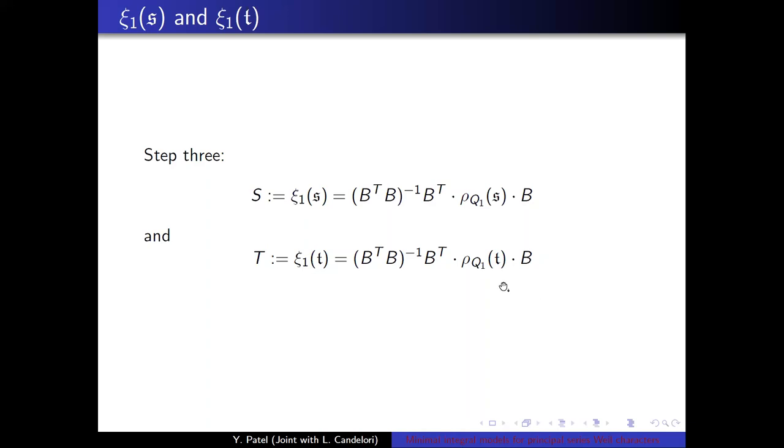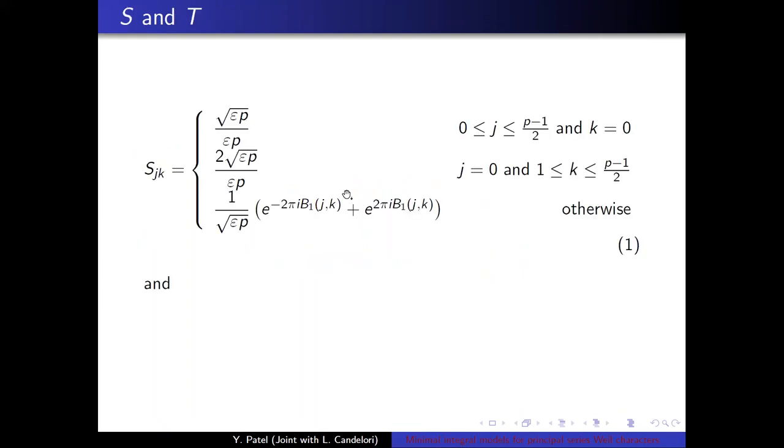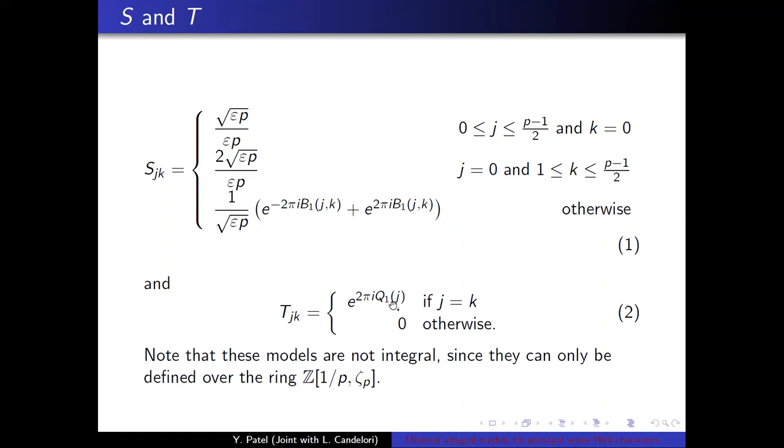In SAGE, you would use the coordinate vector function for reducing it to a subspace, but this one is a little bit faster to compute in SAGE. Okay. So what do S and T look like? Well, the entries of S all have these interesting entries. They're interesting because there's a denominator in each one of them. But T is a diagonal matrix and it's integral. However, the representations are not, the model is not integral because both of them can only be realized over Z adjoined with this fraction one over P and Zeta P.